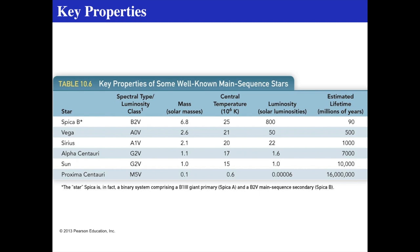The only way to get masses directly is from some sort of dynamic measurement, such as an orbiting companion — that's why binary stars are so incredibly important, because they calibrate the mass column. The central temperature comes from the physics of fusion, luminosity is derived from absolute magnitudes assuming a black body, and then we can estimate how long the star will live. Spica B might only live about 90 million years at about 800 times the luminosity of the Sun.